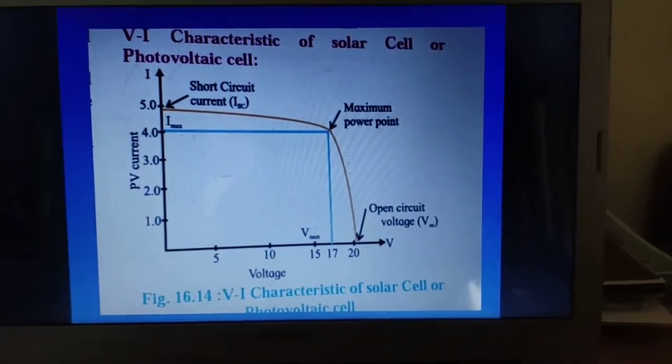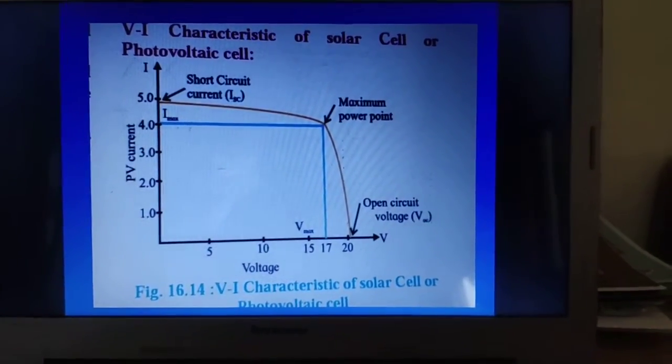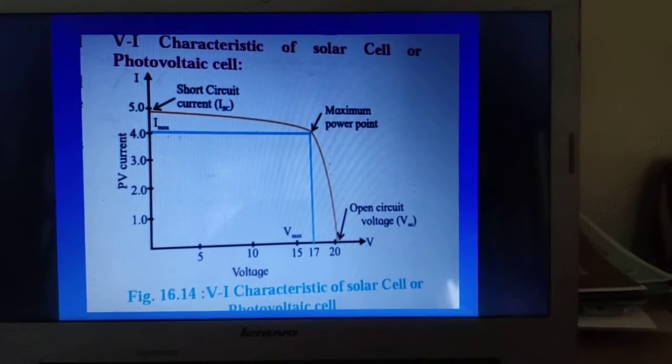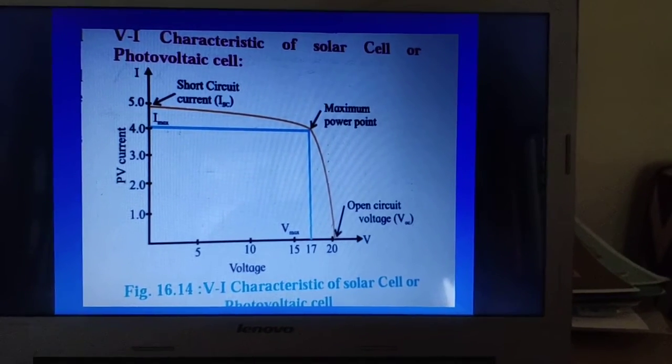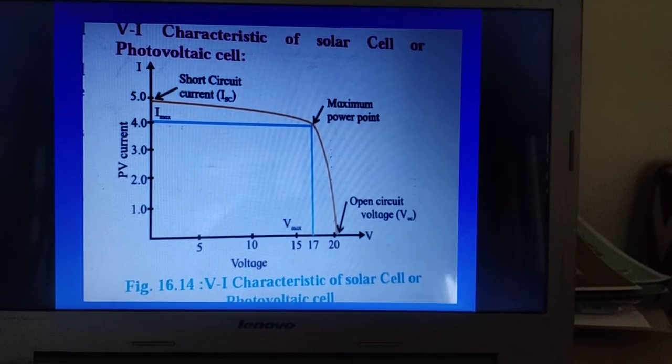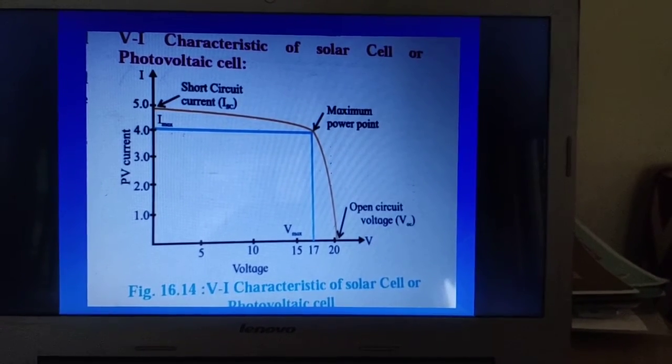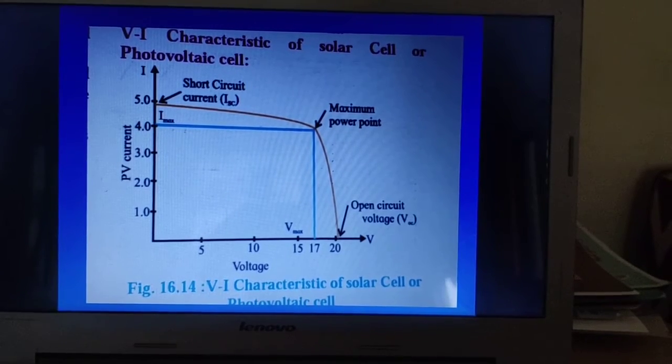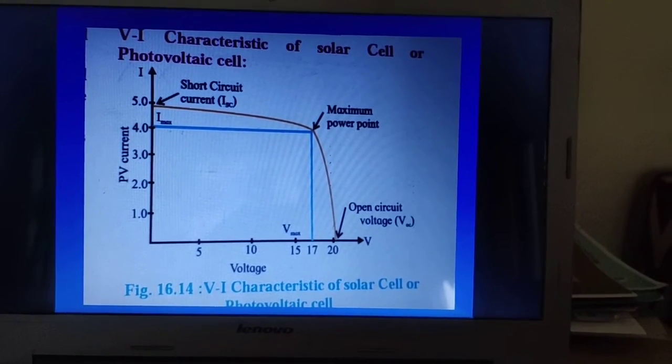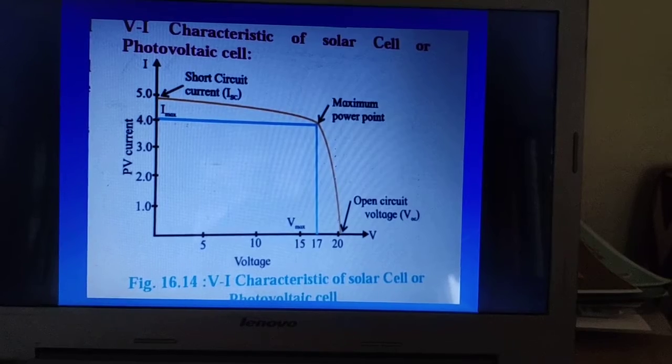Now, this electricity which is generated is stored externally in chemical batteries that we are going to study later on in chemistry also. These are storage batteries. So directly the electric energy converted by the solar cell from sunlight to electric energy is not utilized immediately. It is stored in the storage batteries and used up whenever required.